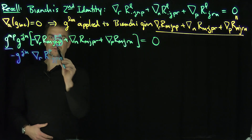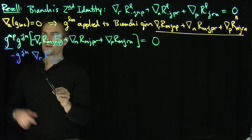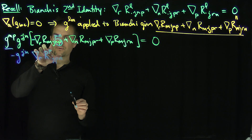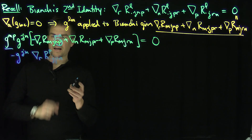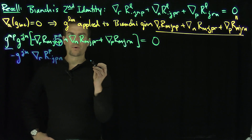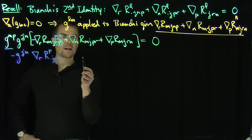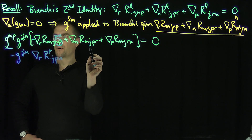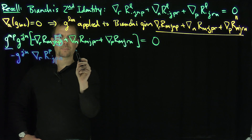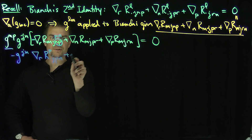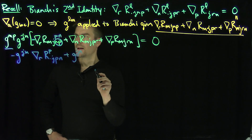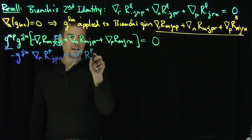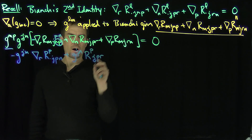Let me make sure that makes sense: flipping N and P gives a negative sign, and hitting with G^MP raises M to P, leaving a J, then P, then N. For the second term, the P is already in the right spot, so this becomes plus G^JN times the N-covariant derivative of R^P_JPR.